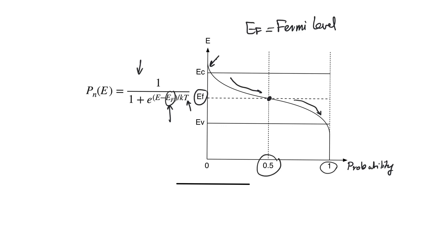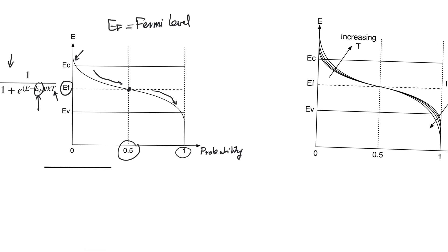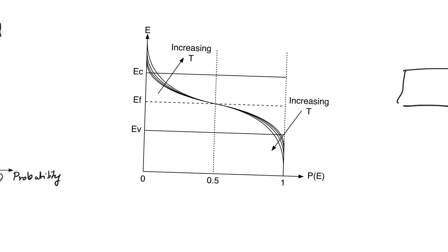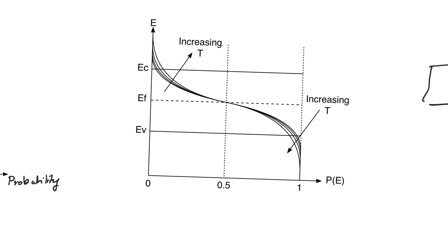It is critically important that we keep track of the Fermi level. Now, what is the effect of temperature on the shape of the Fermi-Dirac function? These curves show the Fermi-Dirac function at different temperature levels T. As we increase T, the tail of the function in the conduction band will increase. The more the temperature, the more the tail that extends into the conduction band. This tail is very important because it represents the actual number of electrons that manage to make it from the valence band to the conduction band.